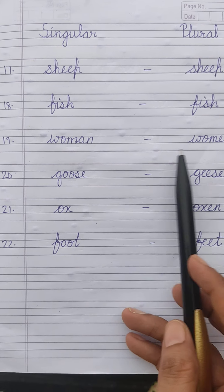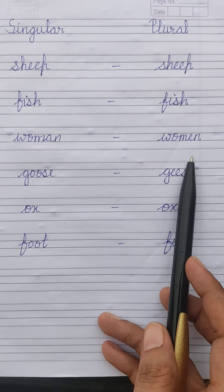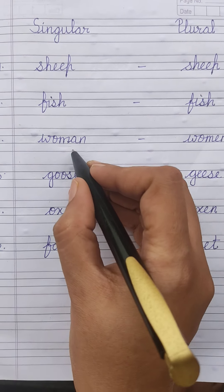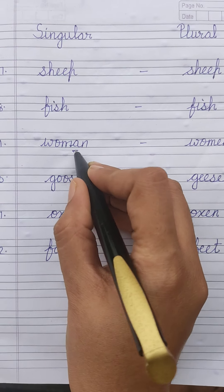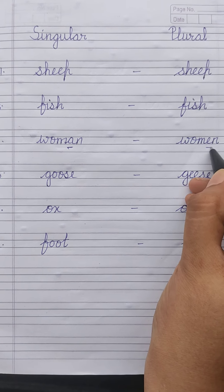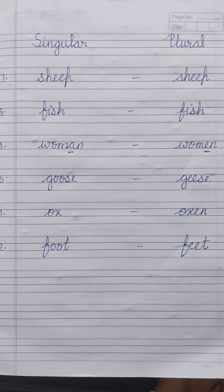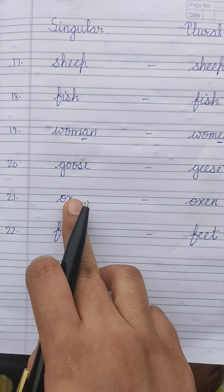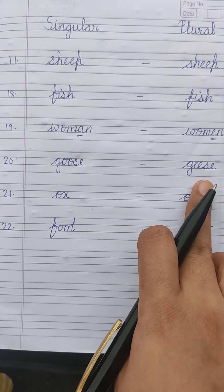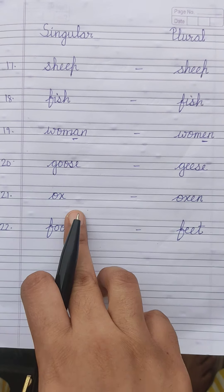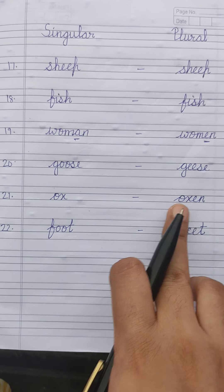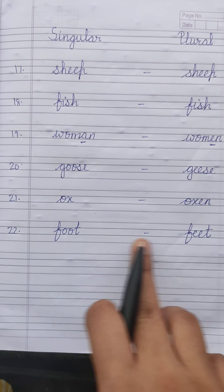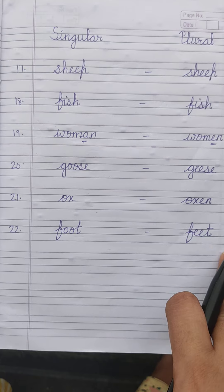Then comes 'woman' — we make it 'women'; the 'a' is changed to 'e.' Similarly: man → men, goose → geese, ox → oxen, foot → feet.